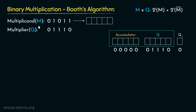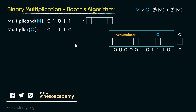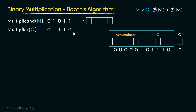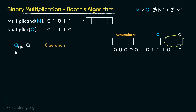When we perform M into Q, at the worst case scenario, the result can be 2N bits, where N is the number of bits in either Q or M — both being 5 bits. So together, 5 plus 5 equals 10 bits, which will yield the result by the end of the operations. The operations will be performed based on the bits available in the LSB of Q and Q-1. With Q LSB and Q-1, that is 2 bits, we can have only 4 different combinations: 00, 01, 10, and 11.